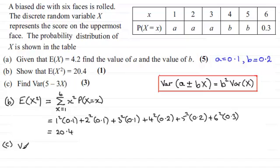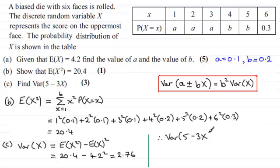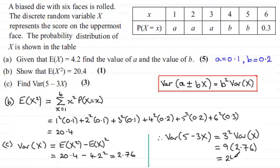So how do we find the variance of X? Well, this is a formula you should be familiar with: it is always equal to E of X squared minus E of X all squared. We've got these values — E of X squared we've just worked out was 20.4, and E of X was 4.2, so that's going to be 4.2 squared. If you work this out, you end up with 2.76. So the variance of 5 minus 3X is equal to 3 squared times 2.76, which is 9 times 2.76, and this comes to 24.84.